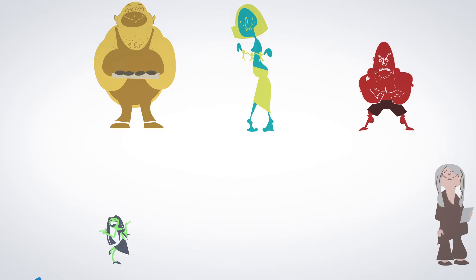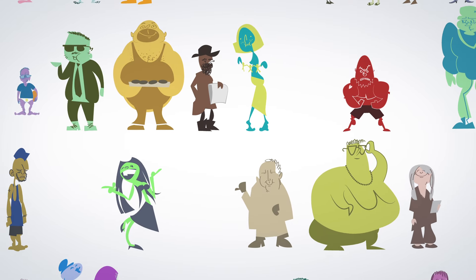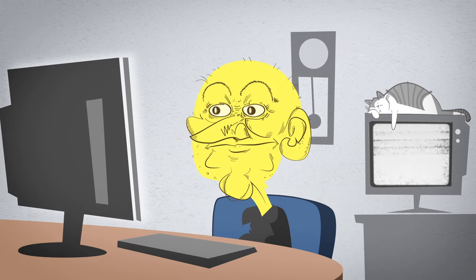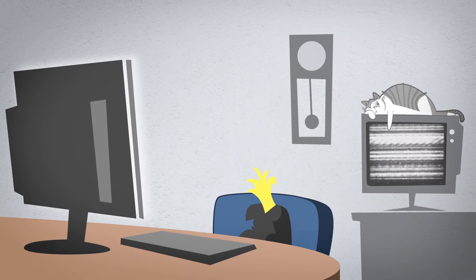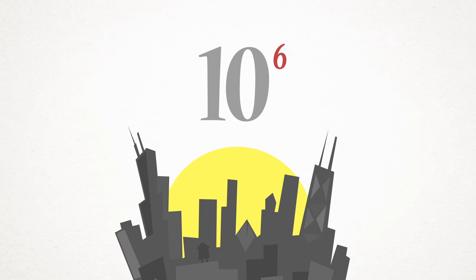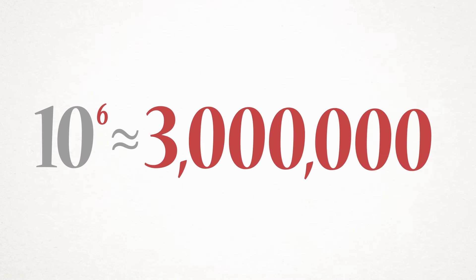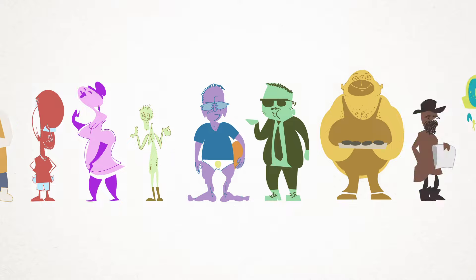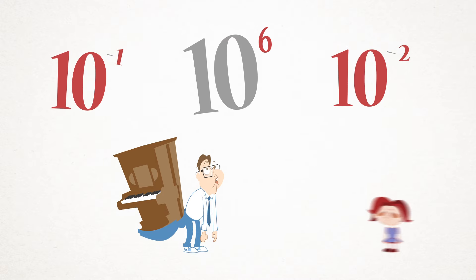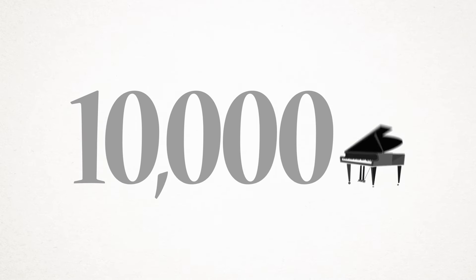We can start by determining how many people live in the city of Chicago. We know that it is a large city, but we may be unsure about exactly how many people live there — are there 1 million people? 5 million people? We can easily get through this uncertainty by using the power of 10. We can estimate the magnitude of the population of Chicago as 10 to the power of 6, which serves as an accurate estimation for the actual population of just under 3 million people. So if there are approximately 10 to the 6th people in Chicago, how many pianos are there? We can say that 1 out of 100 people own a piano, which estimates that there are approximately 10 to the 4th, or 10,000 pianos in Chicago.